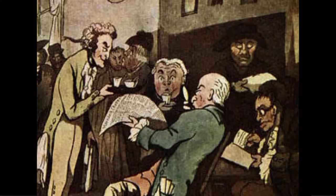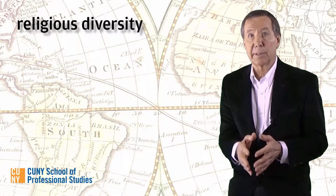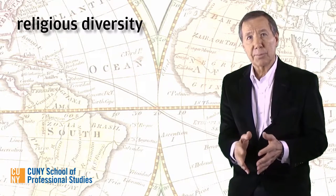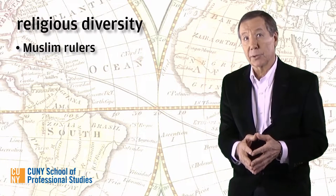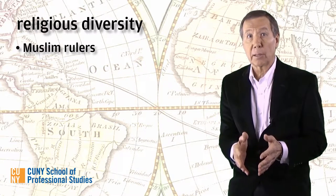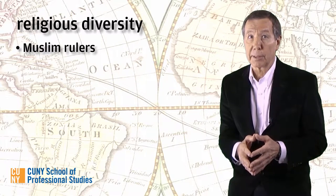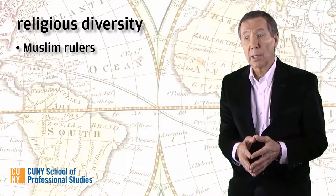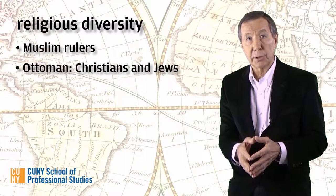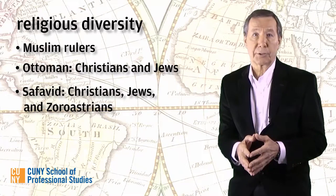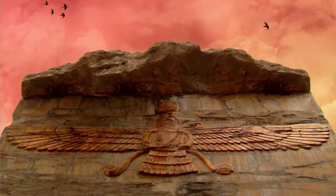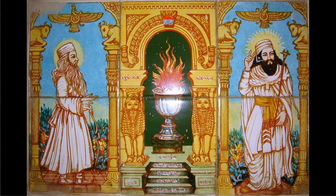Now let's take a look at the religious cultures spawned within the Islamic empires. All three were characterized by religious diversity, but in very different ways. Of course, all three were ruled by Muslims. In the case of the Ottomans and Safavids, Muslims are a large majority, but there are also significant minorities. In the Ottoman Empire, these were represented by Christians and Jews. In the Safavid Empire, by Christians, Jews, and Zoroastrians — an ancient Persian religion dating back to the early 2nd millennium BCE.